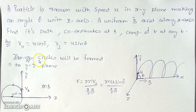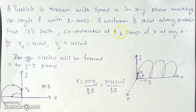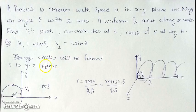This is one of the most fundamental questions based on helical motion of a charged particle. A magnetic field is present along the x-axis, and a particle is thrown in the x-y plane at an angle θ with the x-axis. You have to find its path, coordinates at any time t, and velocity components at any time t. Resolve velocity parallel and perpendicular to the magnetic field: the perpendicular component drives circular motion, while the parallel component moves it along the field direction. Radius R = mv sinθ / qB.